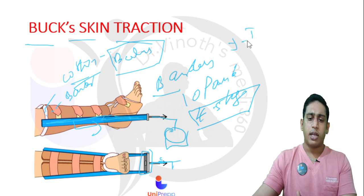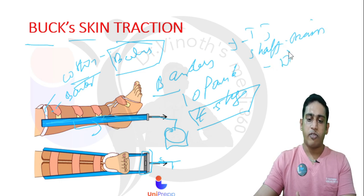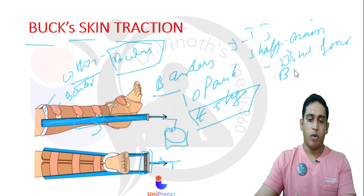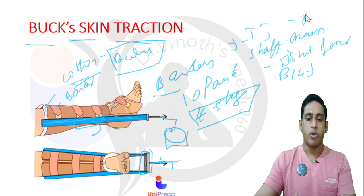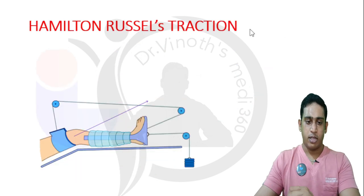Generally for skin traction we use up to 10 pounds — around 4 to 5 kg maximum. Indications include intertrochanteric fracture and shaft femur fracture which are minimally displaced, or distal femur fracture. For intertrochanteric fractures we use an above-knee skin traction or box skin traction.